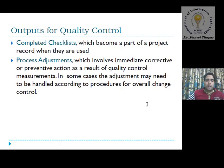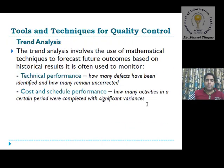Next is completed checklist — after the checklist tool is identified, we will have a complete checklist confirming that the product is qualitatively checked and controlled on the identified parameters. Process adjustment involves an immediate corrective and preventive action as a result of quality control measurements. In some cases the adjustment may need to be handled according to procedure or overall change control. We adjust processes based on what is required according to quality parameters.